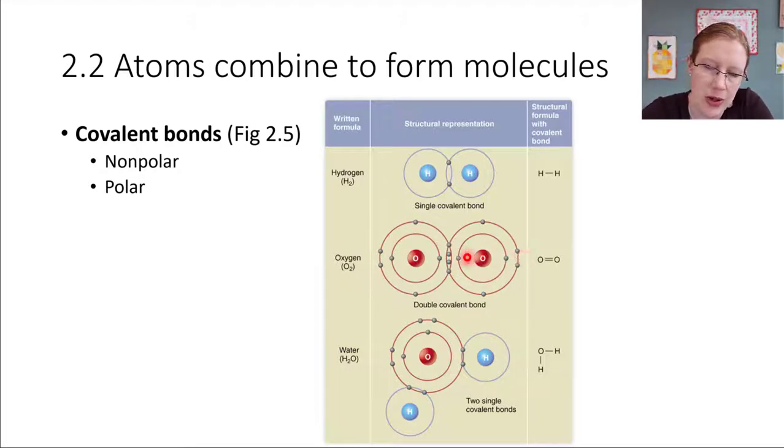This also happens to be called a double bond. So up here with hydrogen, there was one set, one pair of electrons being shared. That gives us a single bond. This one, there are two sets of electrons being shared. It's called a double bond. Not a big deal at this point. Just kind of mentioning it to start getting some of these words out there and familiar to you.